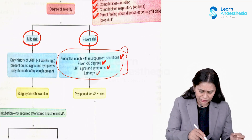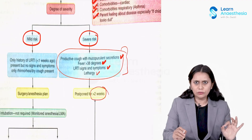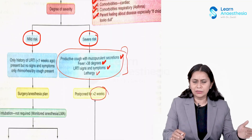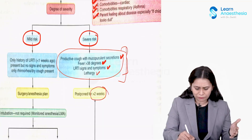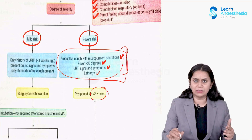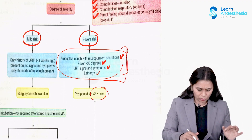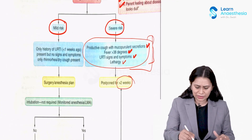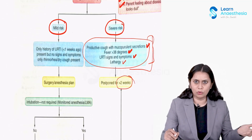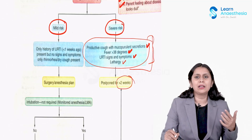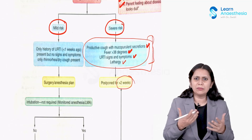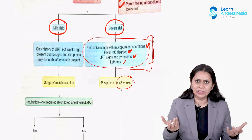We cancel the case for two to four weeks and then re-evaluate. These features present in a child with URTI increase the risk of perioperative respiratory adverse effects, so we need to postpone the surgery. If the child is of mild risk — these features are not present, just a history of URTI less than one week ago with symptoms like a cough or cold — signs and symptoms may persist or just plain rhinorrhea.